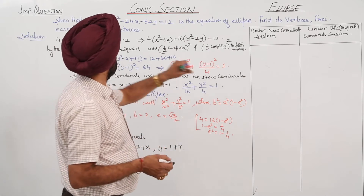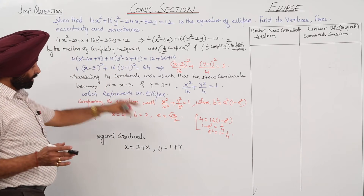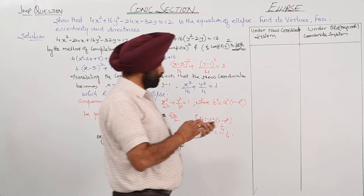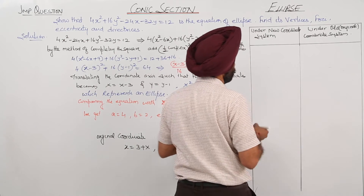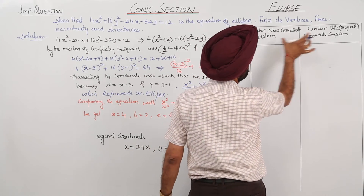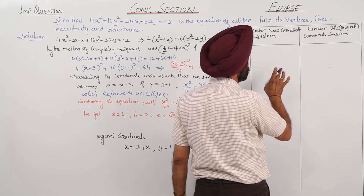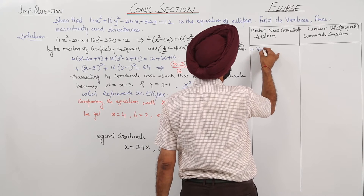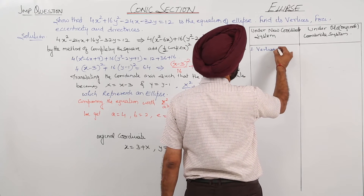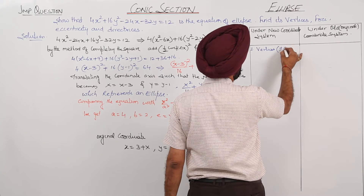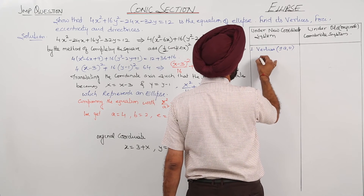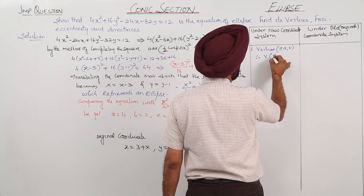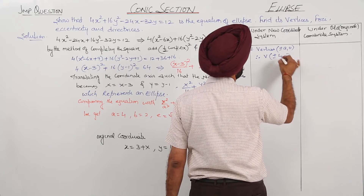Now let's find the vertices. In the translated coordinate system, vertices are at (±a, 0), so (±4, 0). With a = 4, the vertices in translated coordinates are (±4, 0).